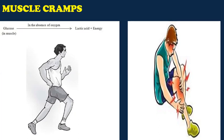Glucose in the muscles is converted into lactic acid and energy is produced in the absence of oxygen. Have you ever wondered, students, why you get muscle cramps after heavy exercise? The cramps occur when muscle cells respire anaerobically. The partial breakdown of glucose produces lactic acid, and the accumulation of lactic acid causes muscle cramps and swelling in the muscles.